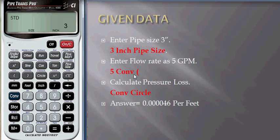Now enter flow rate as 5 gallons per minute. Enter 5, enter convert, and enter open bracket symbol. You can see flow above the symbol so that it will store as a flow rate per gallon per minute.